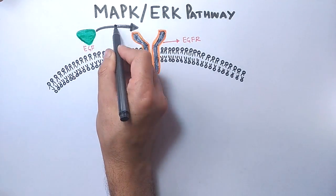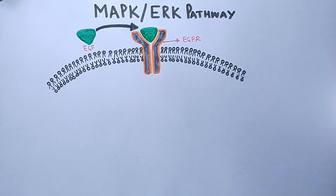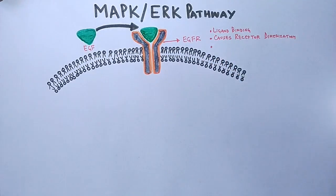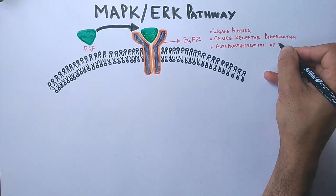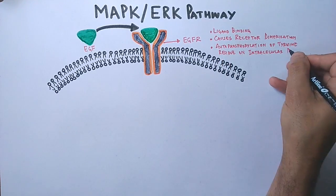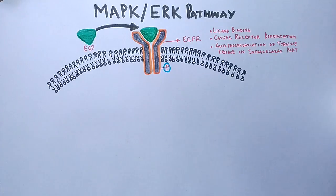To initiate the signal, this EGF binds to the EGF receptor, which causes dimerization of the receptor due to autophosphorylation of tyrosine residues on the intracellular part of the receptor, as you can see in the diagram. Then after that, the receptor dimerization will now signal the molecules in the cell.